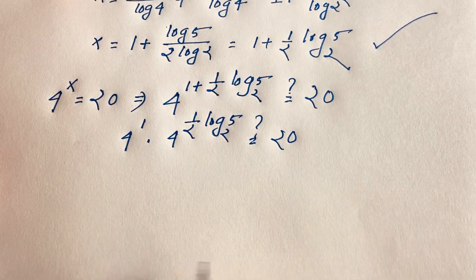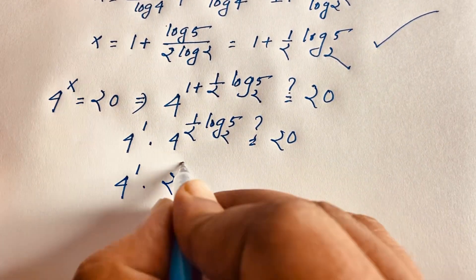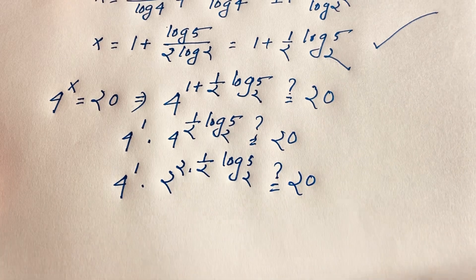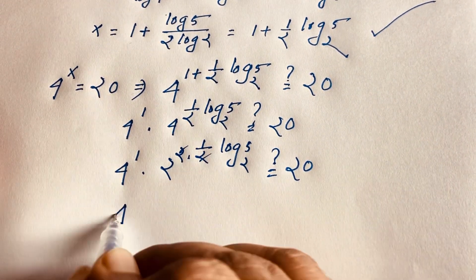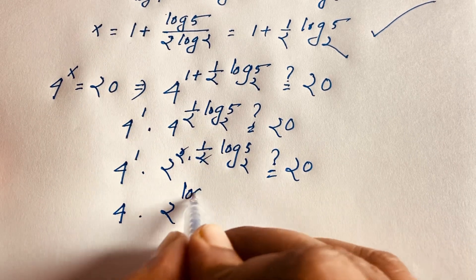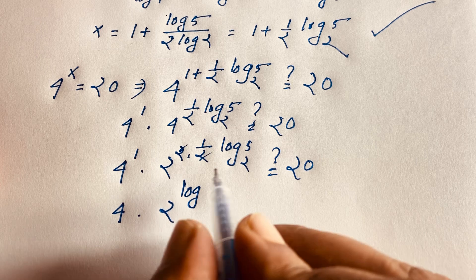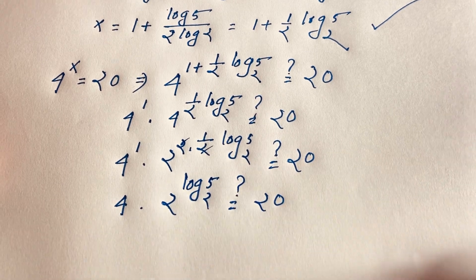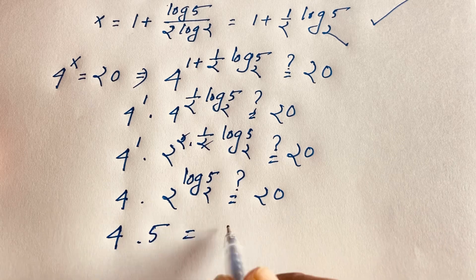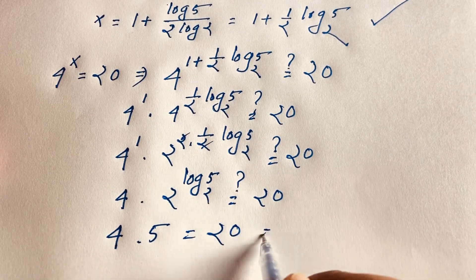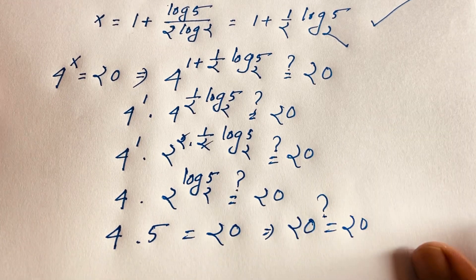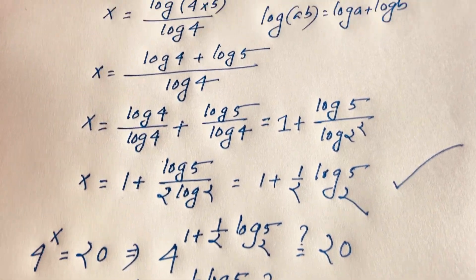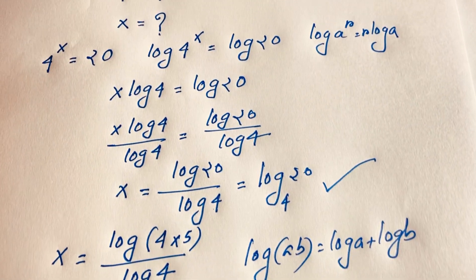Here, 4 to the power 1 equals 4, which is 2 squared. The halves and the 2 in the exponent cancel out, giving 4 times 2 to the power log base 2 of 5. Since 2 to the power log base 2 of 5 equals 5, we get 4 times 5 equals 20. So 20 equals 20, confirming our answer. Therefore x is equal to 1 plus one-half log base 2 of 5. This is our final answer. Thank you all — if you enjoyed this video please subscribe to my channel. Goodbye, take care.